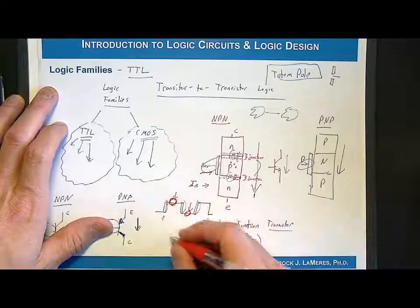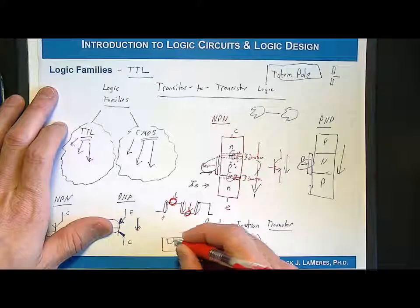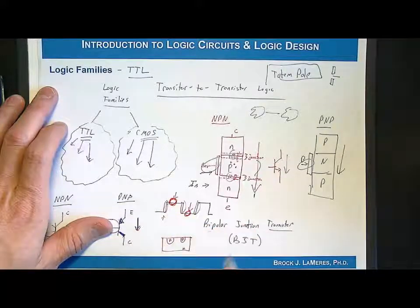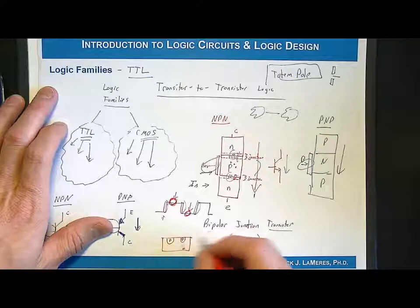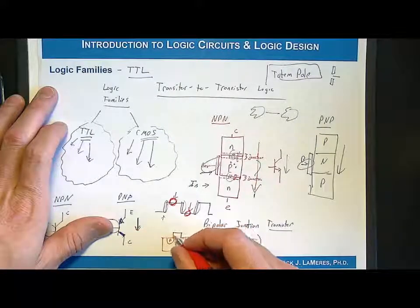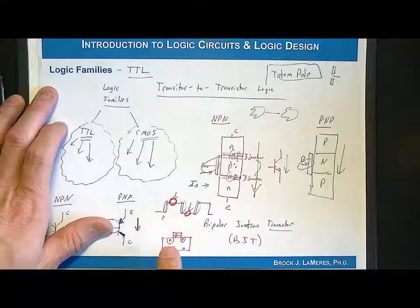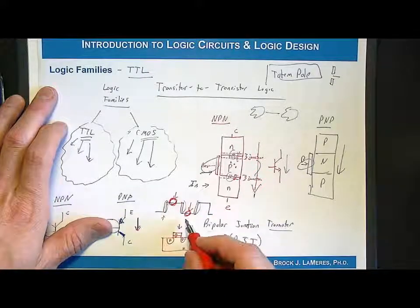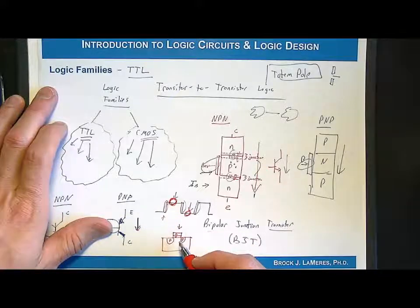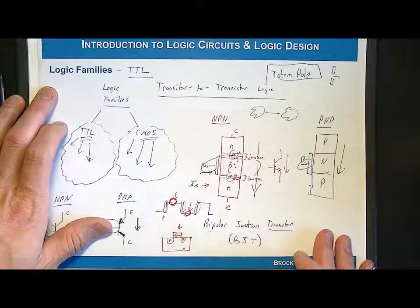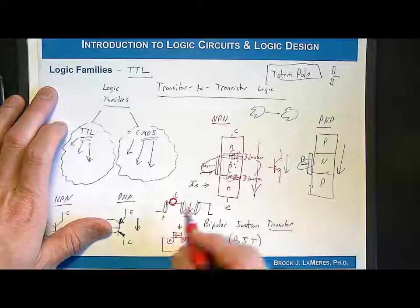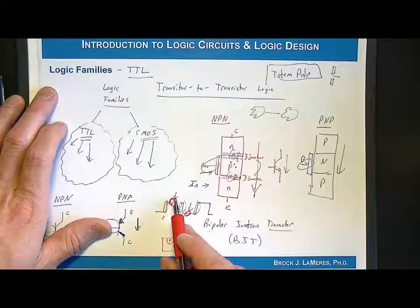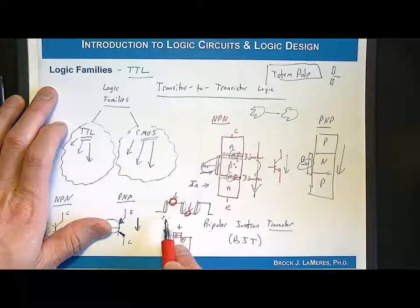That is not the case in CMOS. In CMOS, you have two junctions. Let's say it's a P type transistor. You have an MOS structure, and that oxide prevents DC current from flowing. So when you're in a steady state, no current flows. That is key to the success of CMOS. You do not have power consumption in an ideal CMOS circuit. You do not have power consumption when you're in a steady logic state.